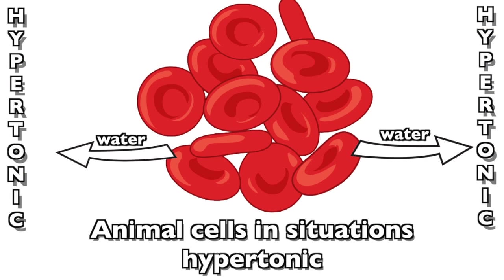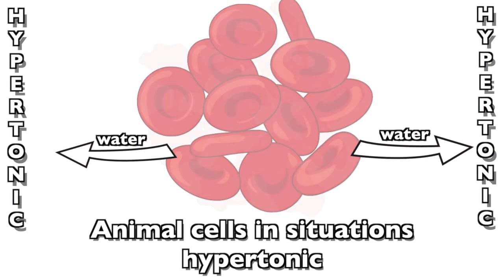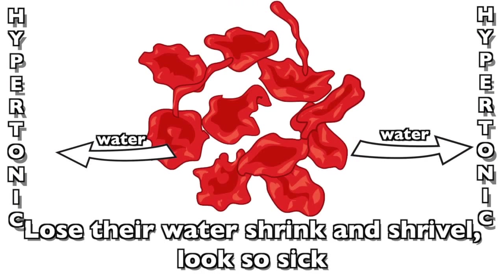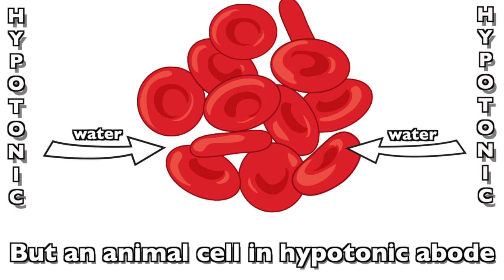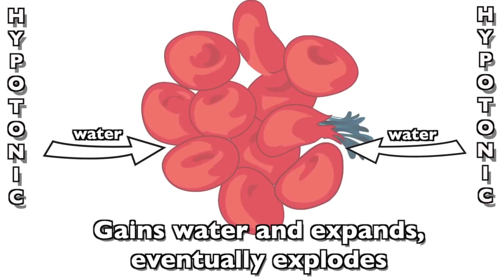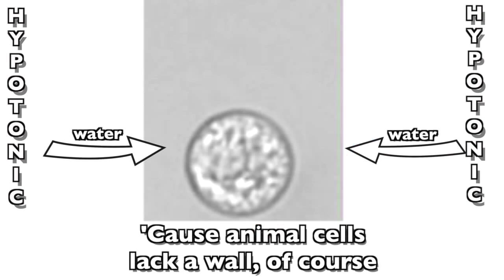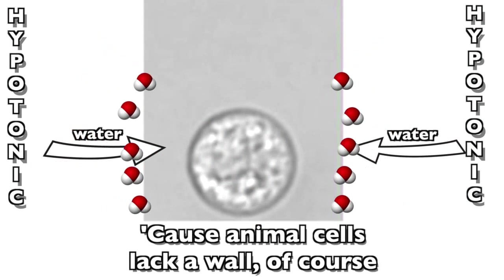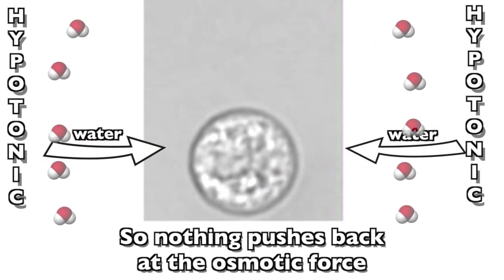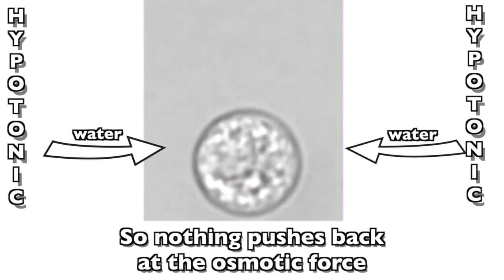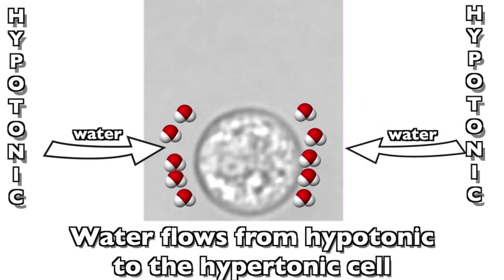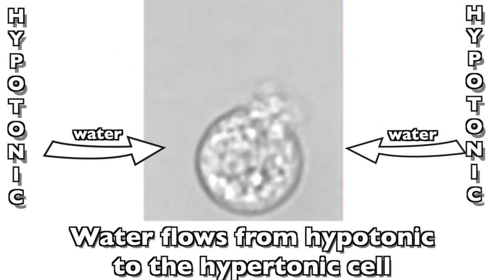Animal cells in hypertonic situations lose their water, shrink and shrivel — looks so sick. But an animal cell in a hypotonic abode gains water and expands, eventually explodes. Because animal cells lack a cell wall, of course, so nothing pushes back at the osmotic force. Water flows from hypotonic to the hypertonic cell, which bursts because the membrane can't stop the swell.